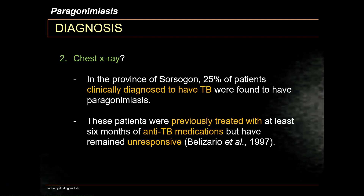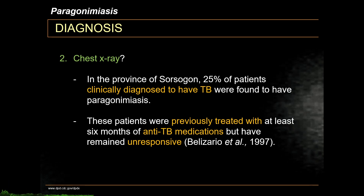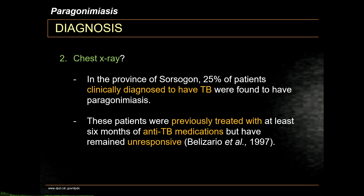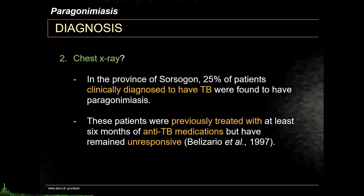Imagine the amount of drugs they are ingesting that don't treat anything. You should also note that up to 25% of patients with pulmonary tuberculosis may have pulmonary Paragonimiasis, especially in endemic areas.